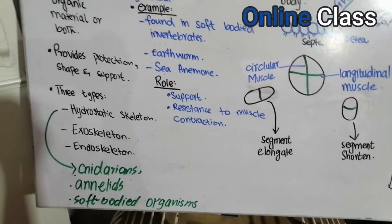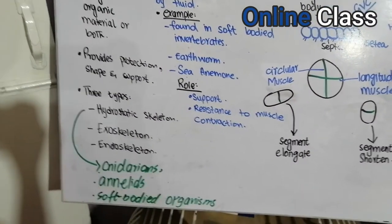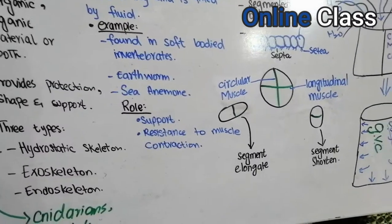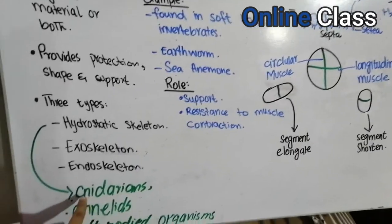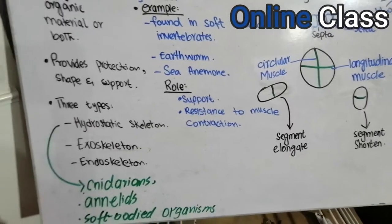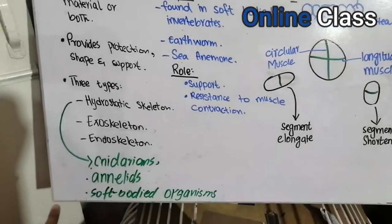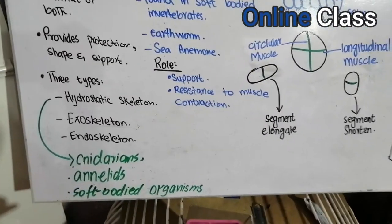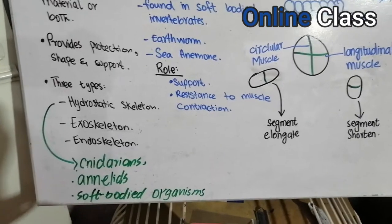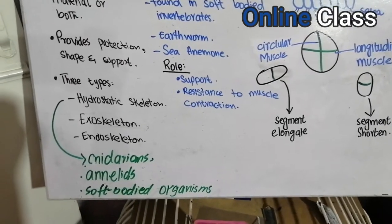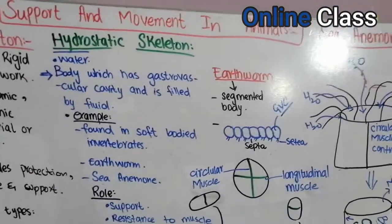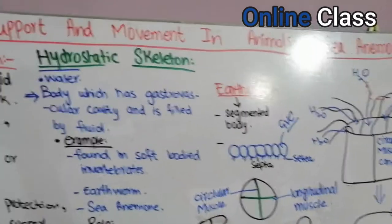The hydrostatic skeleton is found in soft-bodied organisms such as cnidarians and annelids, where it provides support and movement.